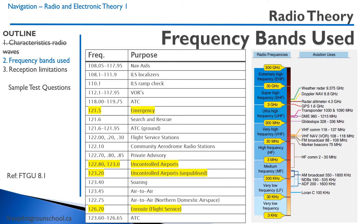Remember from your radio license: uncontrolled airports use 122.8, 123.0, and 123.2. The en route flight advisory service frequency is 126.7, and ATC has pretty much the rest of those frequencies.